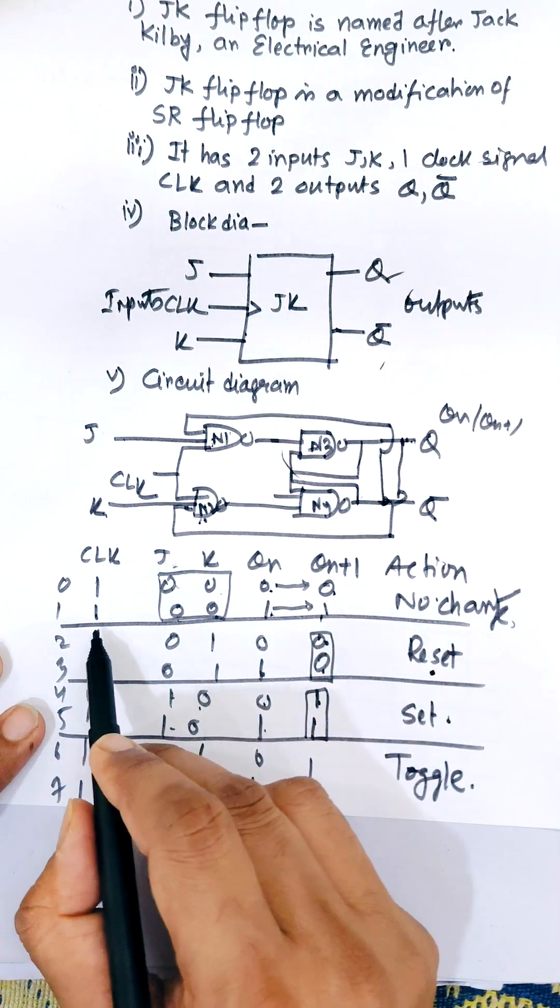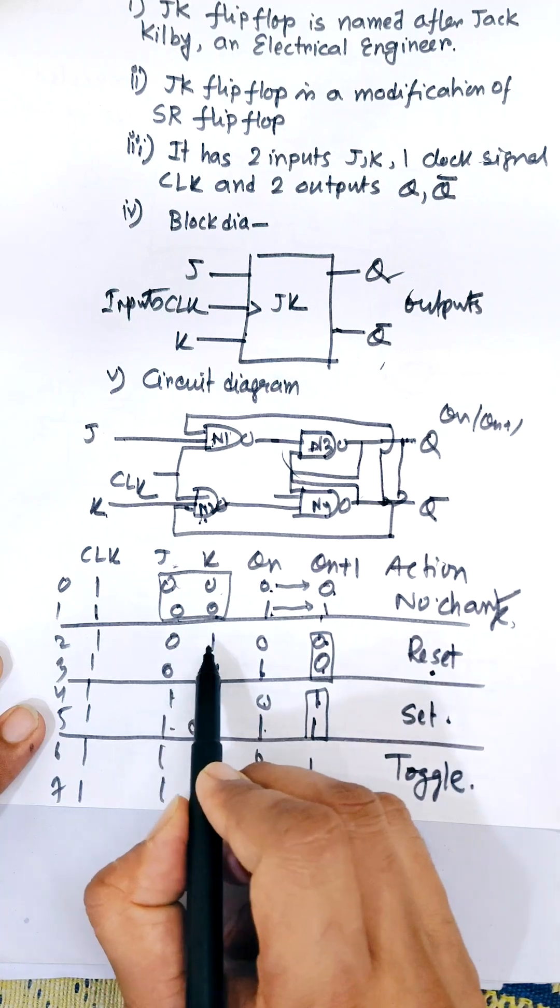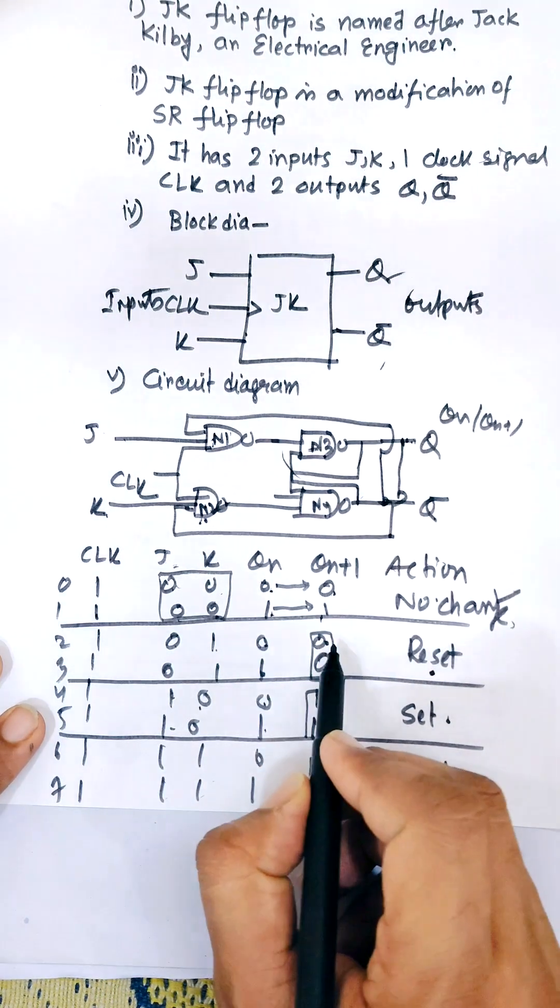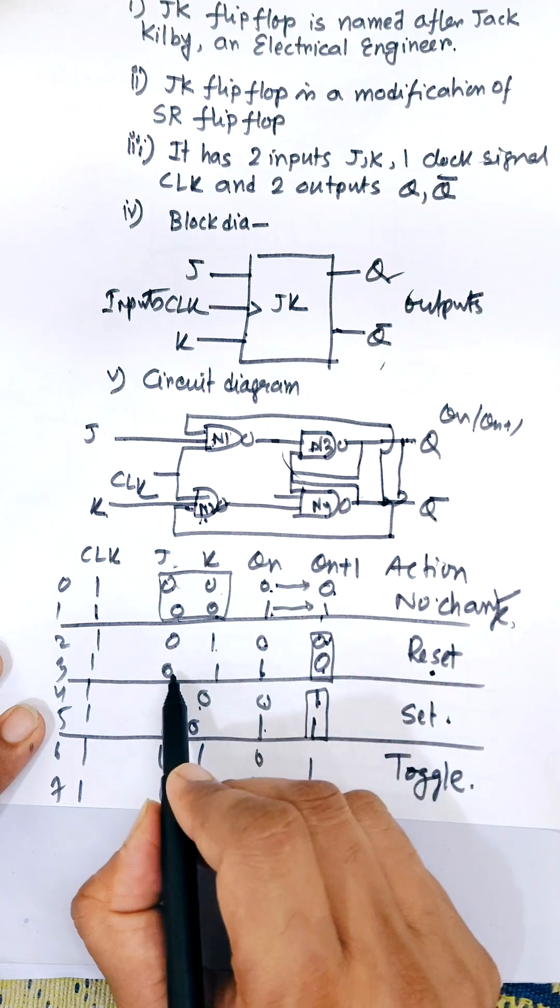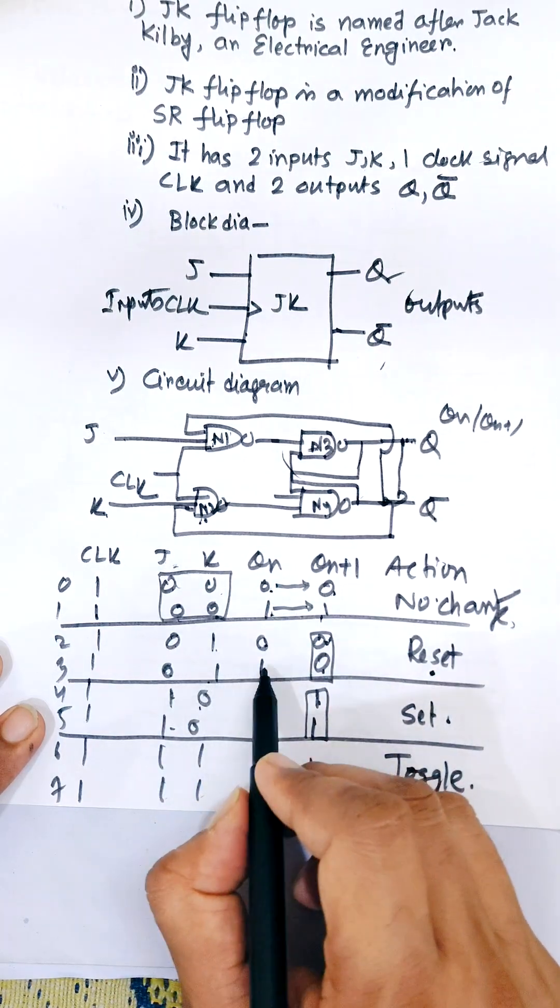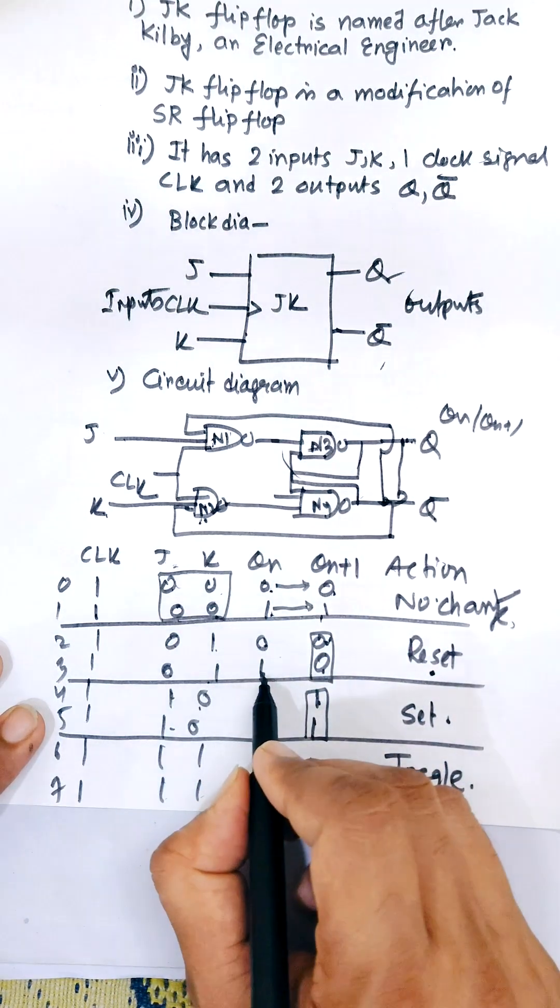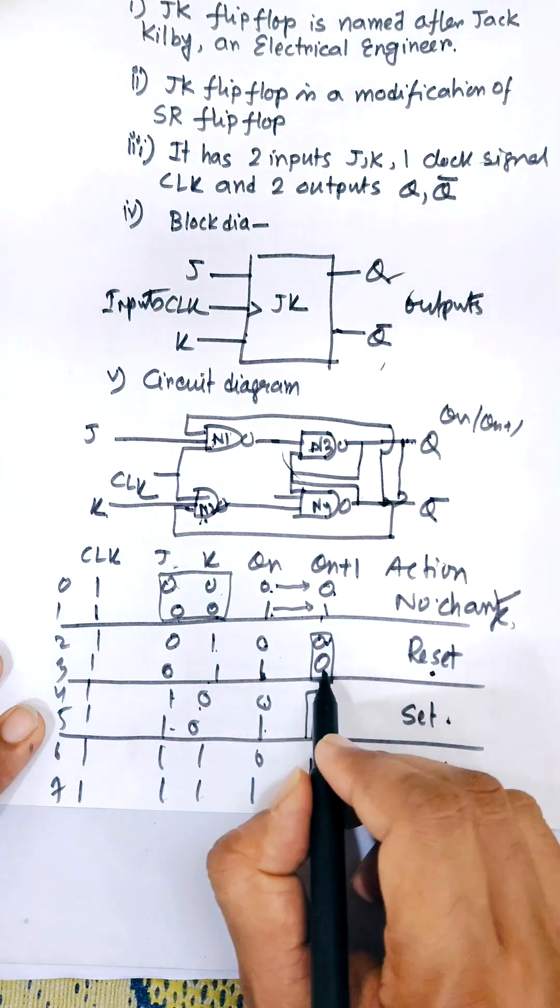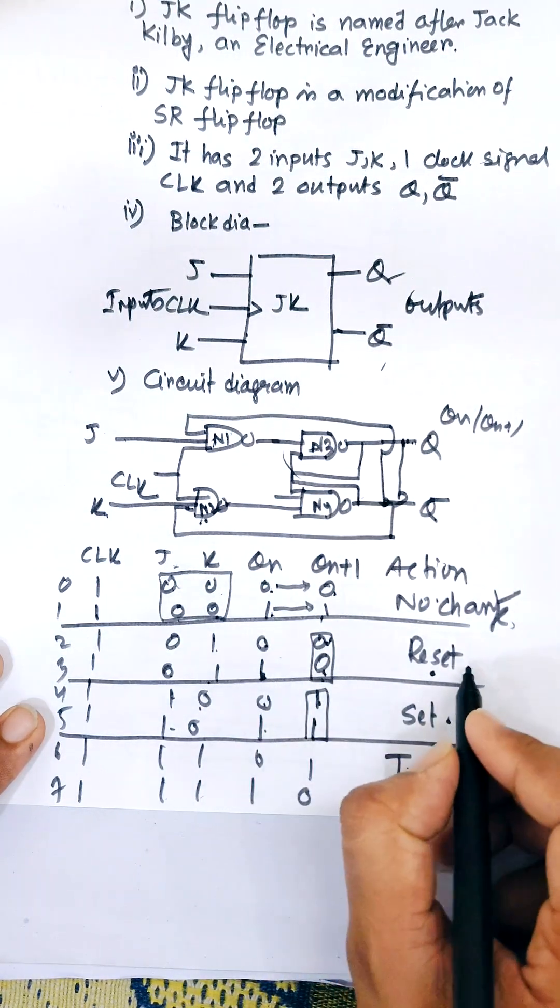When the clock is 1 and input is 01 and QN is suppose 0, then QN+1 also 0. And its input again 01, suppose output next state is 1, then after present state is 1 and next state will be 0. As both are 0, that means reset.